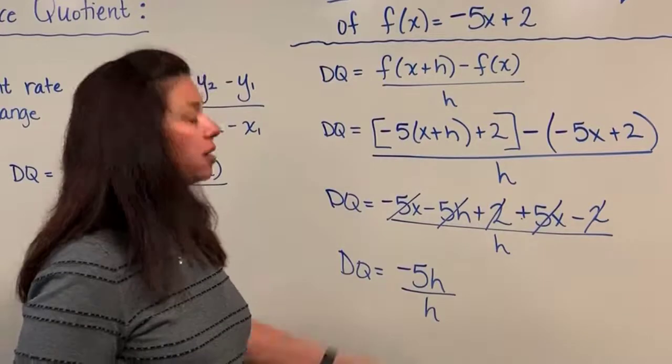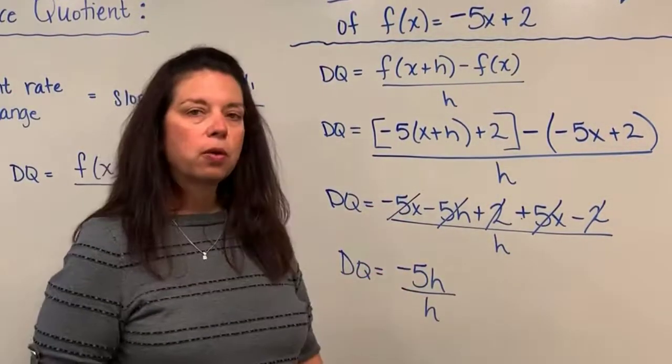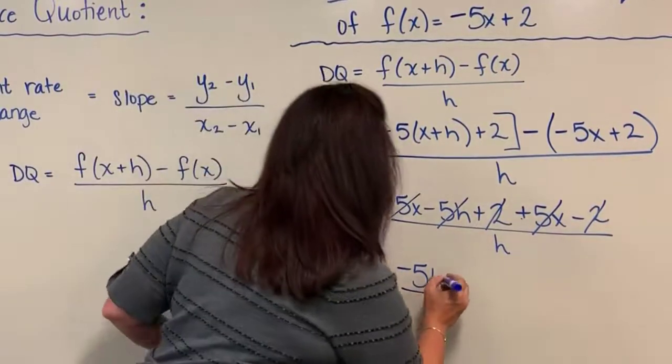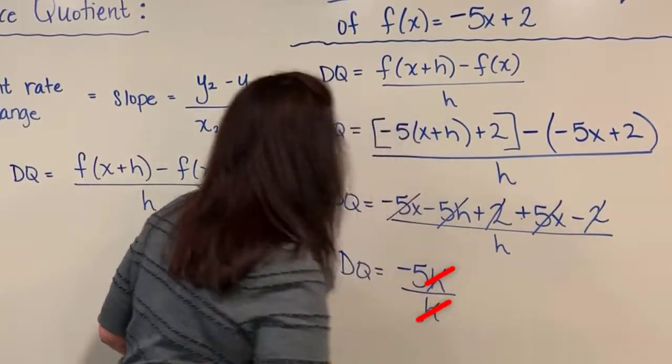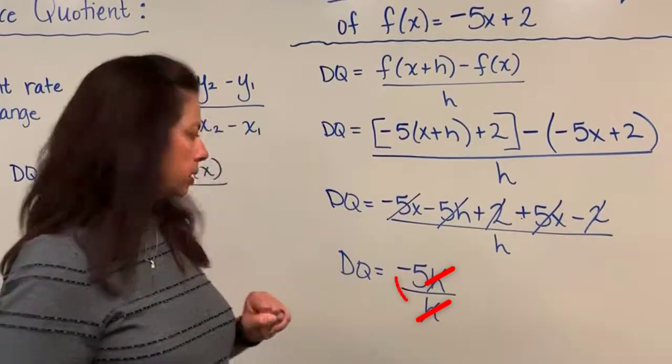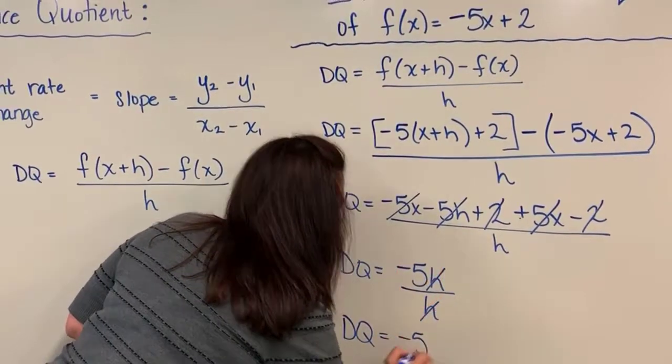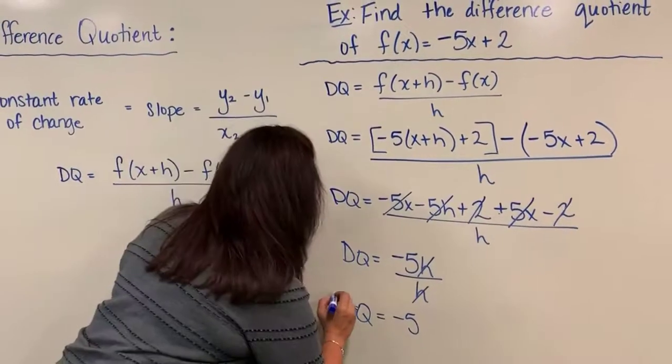And what we notice here is I have a quantity in the numerator that is shared with the quantity in the denominator, the h's. So I can divide out those two h's. h divided by h reduces down to 1. What's left now is a negative 5. So for this problem we can say that the difference quotient is just equal to the quantity negative 5.